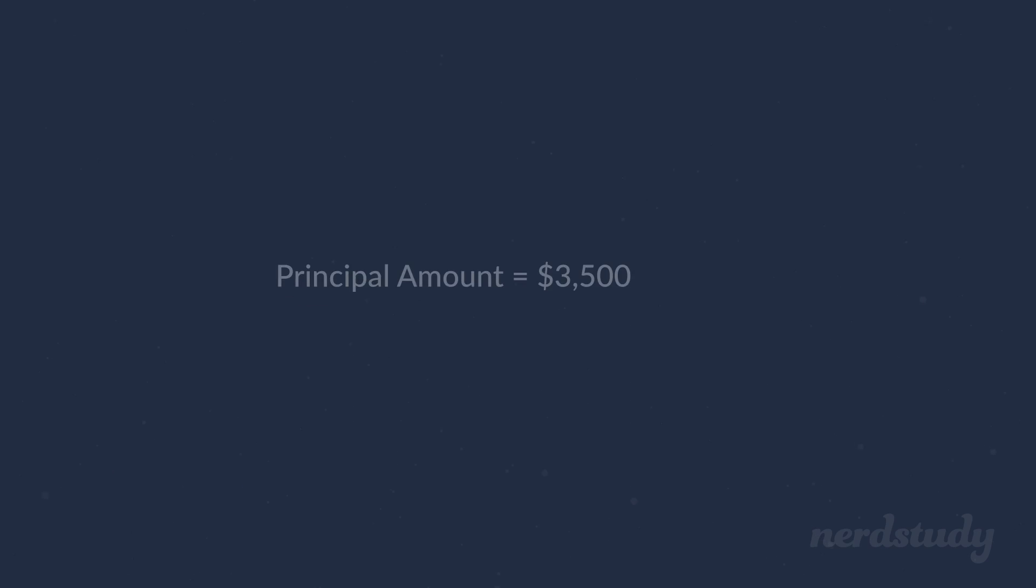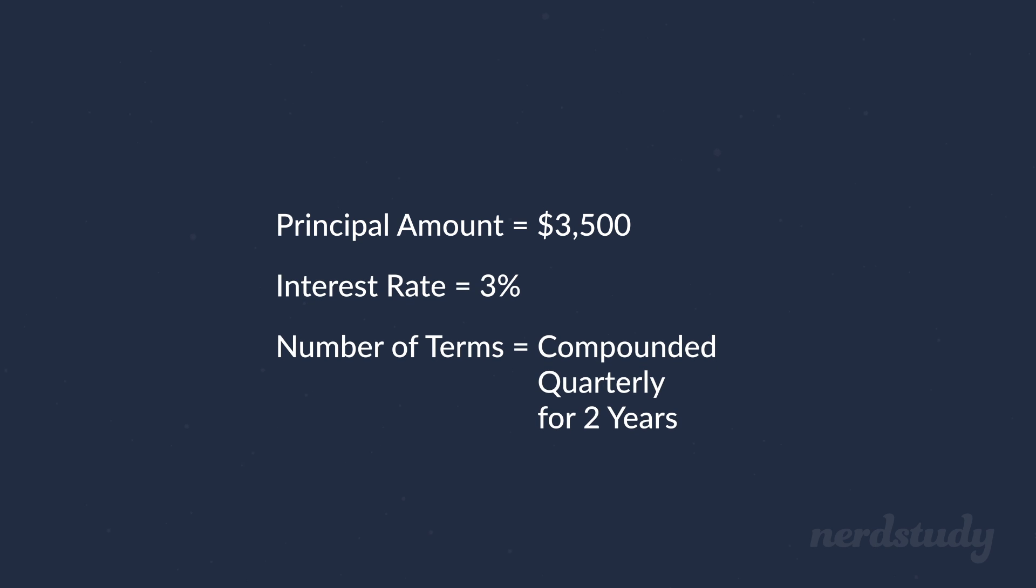If an investment of $3,500 was made as the principal amount at an interest rate of 3%, compounded quarterly for 2 years, what would be the total amount of the investment at the end of the second year?